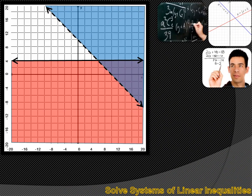What would you do if you were given a graph showing a solution set to two inequalities, and you were asked to determine what these linear inequalities were? We can look at this graph and see that this line represents the boundary line with everything below it representing one of the solution sets to one of the inequalities, and this boundary line with the blue area above it represents the solution set to the other inequality. So all we've got to do is identify each inequality and we'll solve the problem.